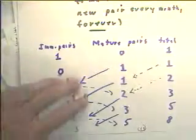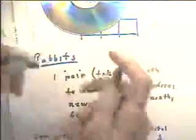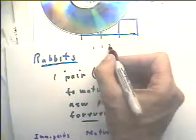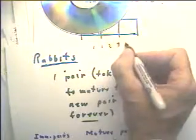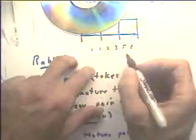We might even want to write out the sequence, and I'm going to do that here. The sequence goes 1, 1, 2, 3, 5, 8, and we could continue the sequence, see if it makes sense.